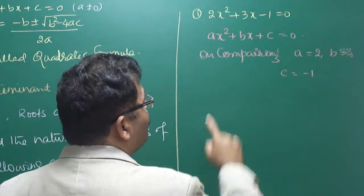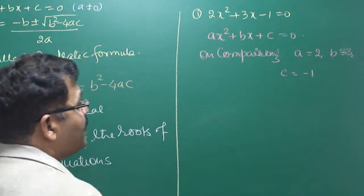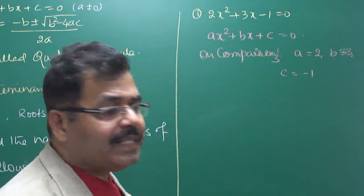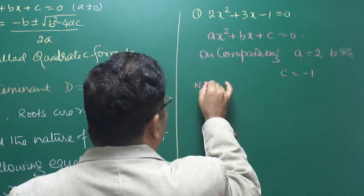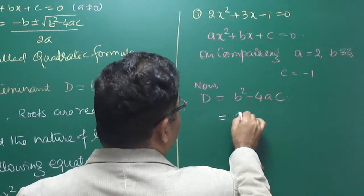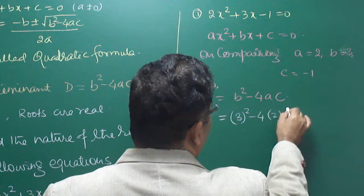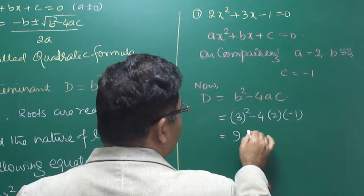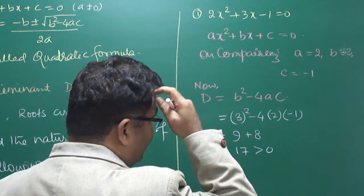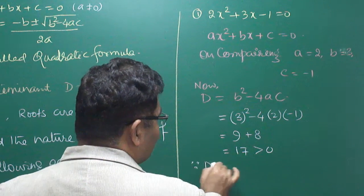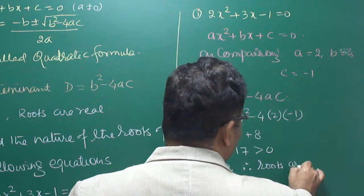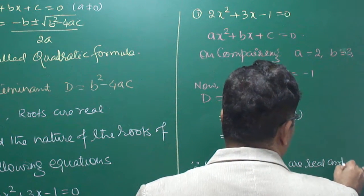Now we find D, the discriminant, which tells us whether the roots are real or imaginary. D equals b squared minus 4ac. That is 3 squared minus 4 times 2 times minus 1, which is 9 plus 8 equals 17. Since D equals 17, which is greater than zero, therefore roots are real and unequal.